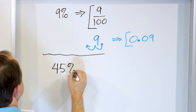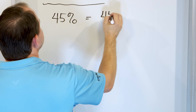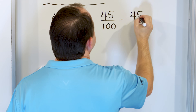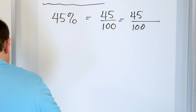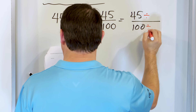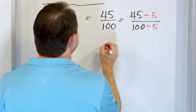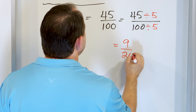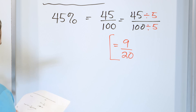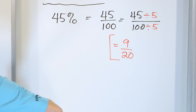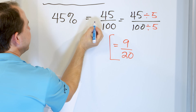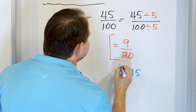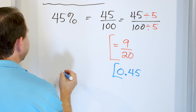Let's look at 45%. To convert to a fraction: 45 out of 100. I'll simplify by dividing top and bottom by 5 — 45 divided by 5 is 9, and 100 divided by 5 is 20 — giving us 9/20. For the decimal, move the decimal two spots to the left: 0.45. So 0.45 is the decimal equivalent and 9/20 is the fractional equivalent of 45%.